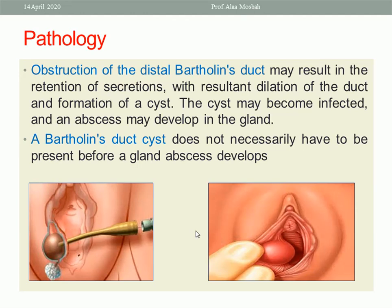Obstruction of the distal Bartholin ducts causes dilatation in the duct and formation of a cyst, as seen in the picture. The cyst may become infected and an abscess may develop later in the gland. Obstruction of the terminal part of the duct leads to collection of secretion inside, causing a duct cyst. Later on, infection may occur, complicating into a gland abscess.